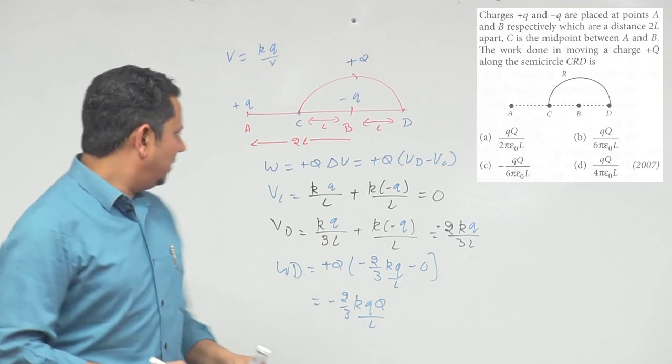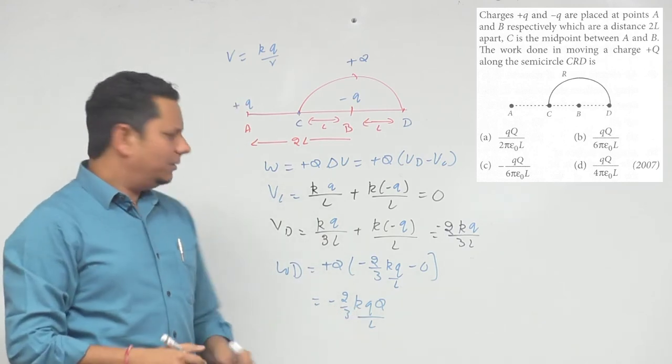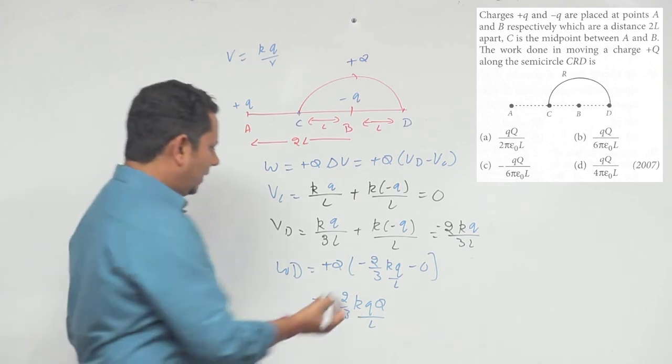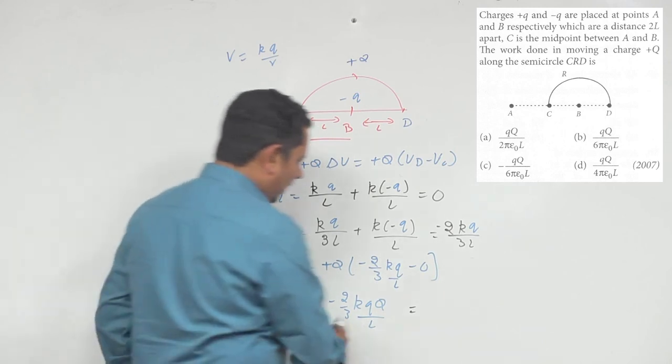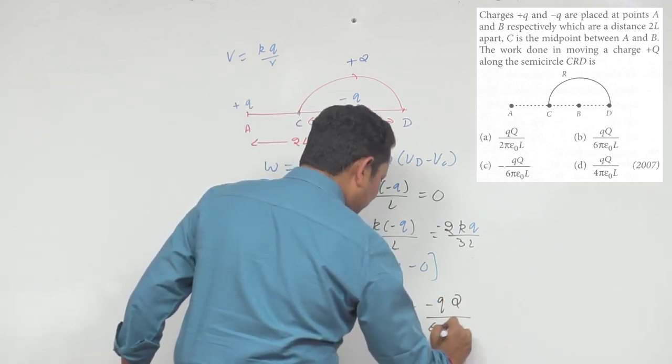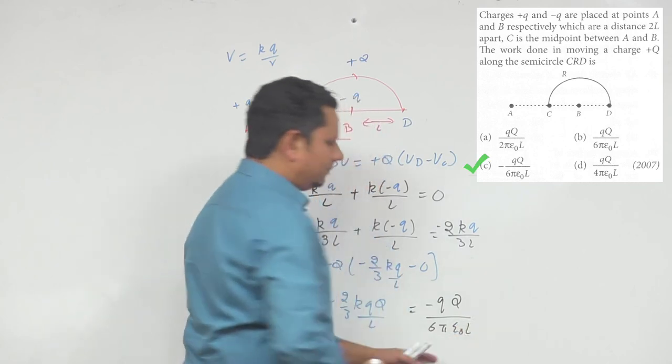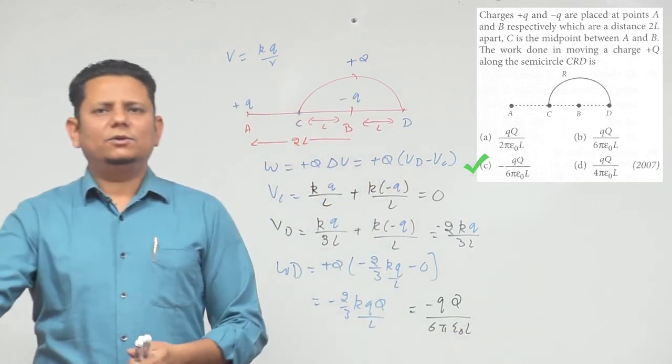Now if we put the value of K in terms of epsilon, in the 4 options given, K is not written as K but in terms of 4πε. So writing that, it becomes 1/(4πε₀), 2 cancels, multiplying gives Q², with minus sign, divided by 6πε₀L. So based on this, we can say that option number C would be the right answer.